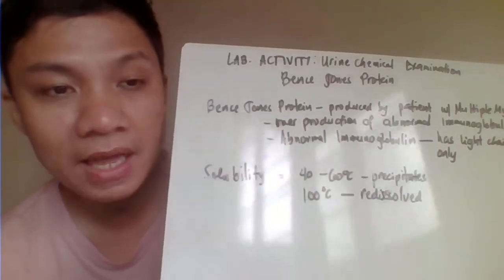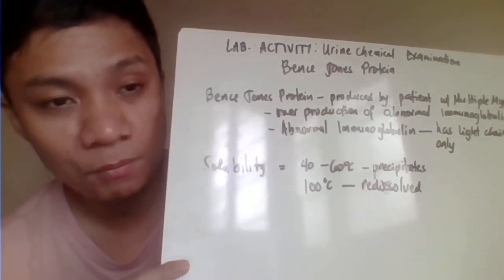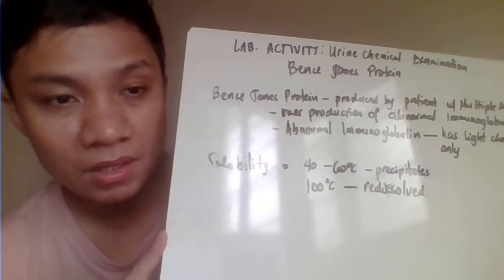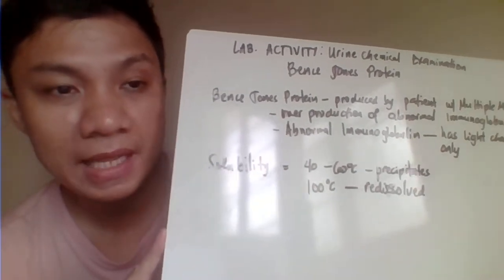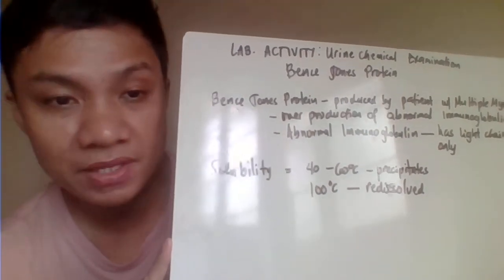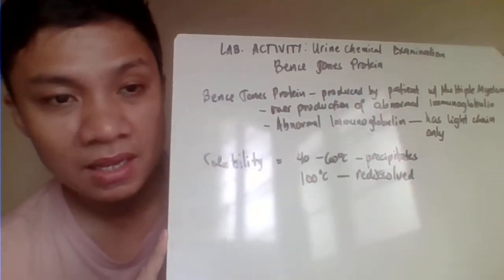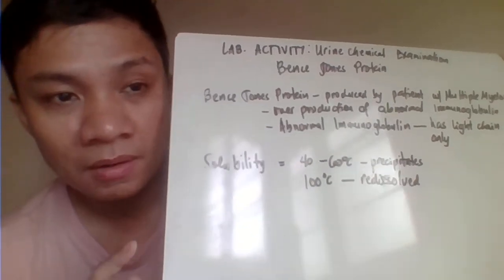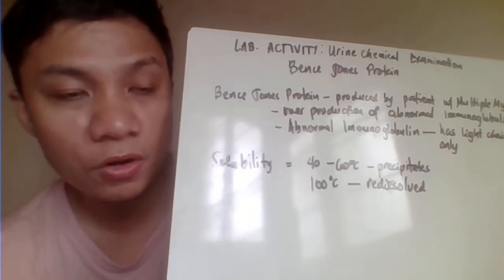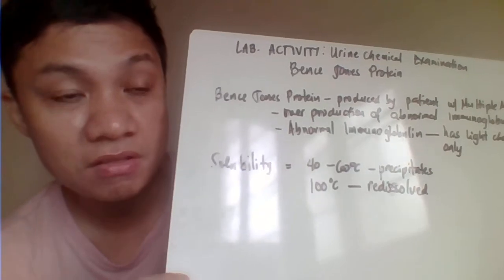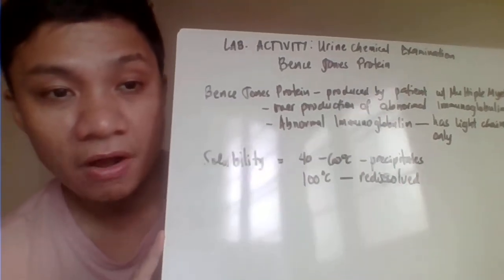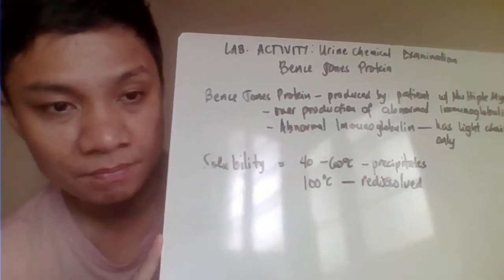But in the case of multiple myeloma, what it tries to produce is only the light chain — there is no heavy chain. And it produces so much of that immunoglobulin that would eventually result in the production of large amounts of Bence Jones protein.